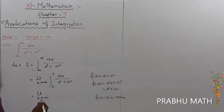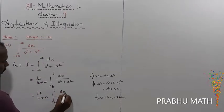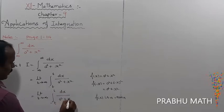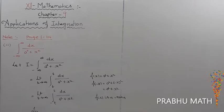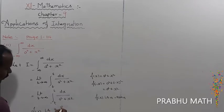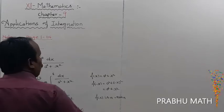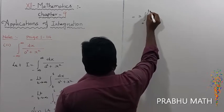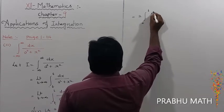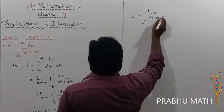Since f of x is an even function, that is called two times of the value. So the integral from minus t to plus t of dx divided by a squared plus x squared equals two times the integral from 0 to t of dx divided by a squared plus x squared.